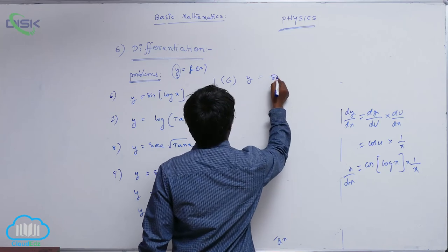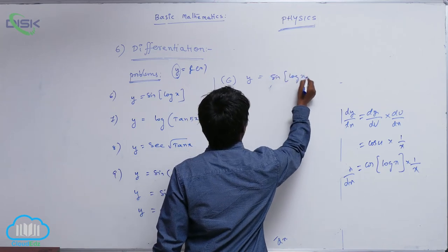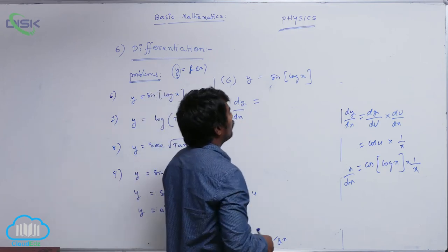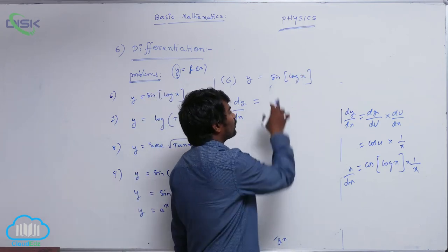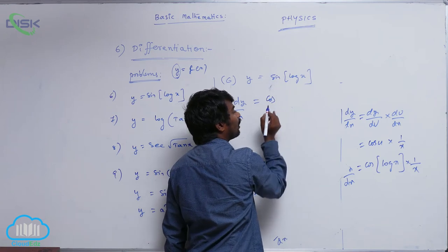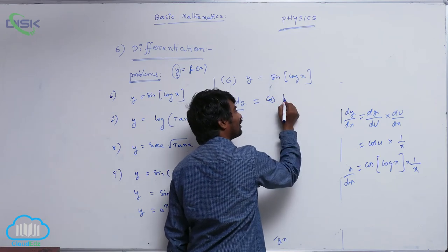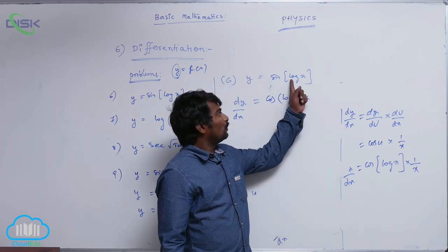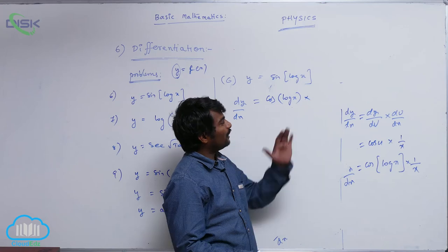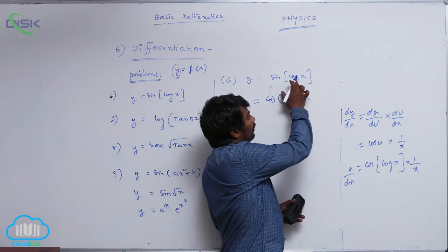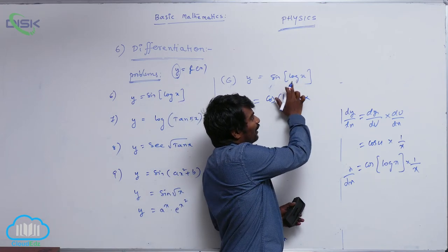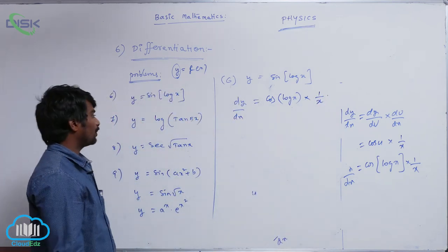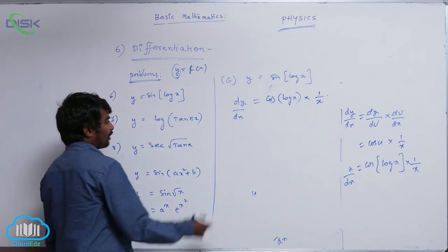Sixth problem: y is equal to sin of log x. So dy by dx — I am assuming log x as u. The derivative of sin u is cos u, but u is log x. Then du by dx means d by dx of log x, which equals 1 by x. So directly, dy by dx equals cos of log x into 1 by x.